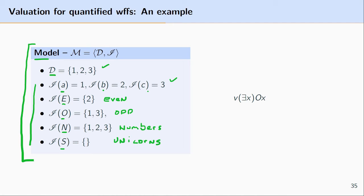Next, let's look at the expression EXOX — the existentially quantified XOX. This says at least one item in the domain is in the interpretation of O. We see that in the domain there's one, two, and three, and in the interpretation of O there's one and three. So there's at least one item in the domain that is in the interpretation of O. You only need one for this to be true, and it comes out as true — in fact we have two items here, which is more than sufficient.